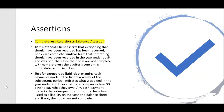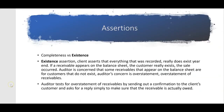With completeness, the client asserts that everything that should have been recorded has been recorded; the auditor fears something should have been recorded in the year under audit and was not. With the completeness assertion, the auditor's concern is always understatement, which is especially significant when it comes to liabilities, because clients tend to want to understate those. Now let's look at existence, because you're not going to pass until you can tell me the difference between completeness and existence.